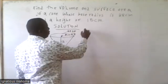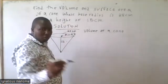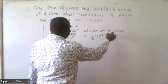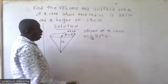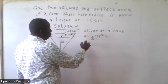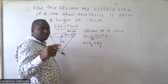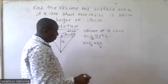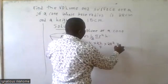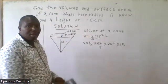We start with the volume of a cone. The formula for the volume of a cone is one-third times pi r squared times h, where pi r squared is the base area because it is circular. So our volume in this case: we'll take pi as 22 over 7. If you are not told which value of pi to use, always use 22 over 7. So: one-third times 22 over 7 times 28 squared times 15.